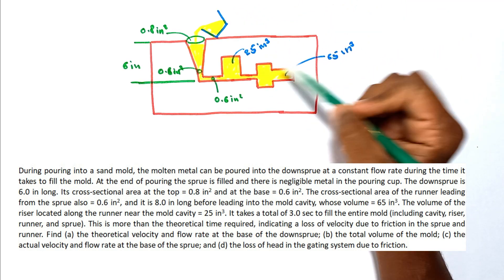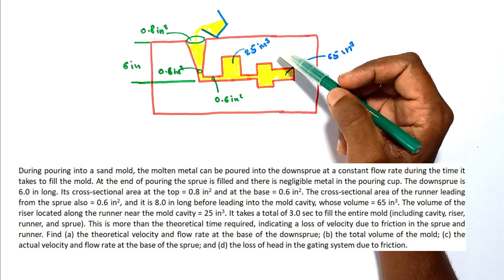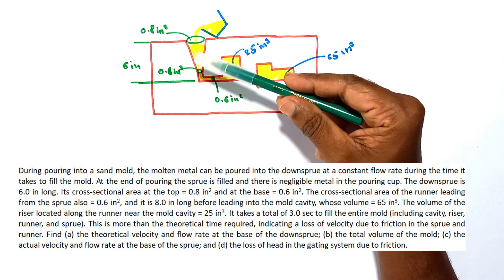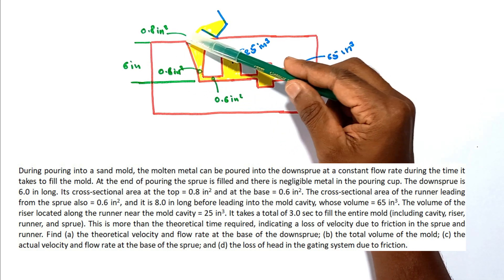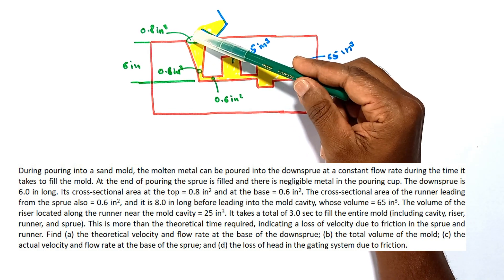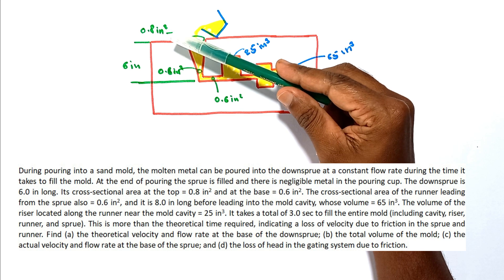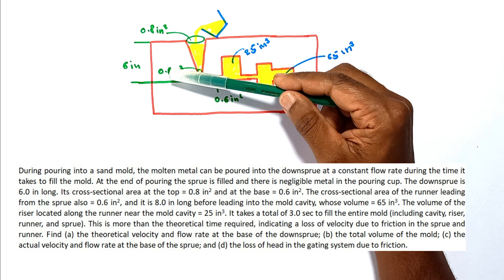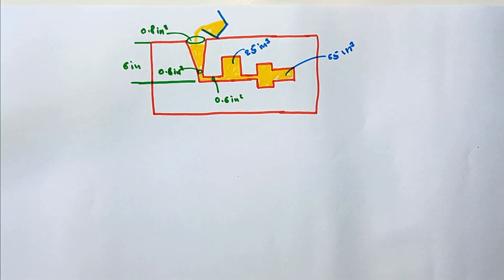Reading the figure for this problem: the casting volume is given as 65 cubic inches and the riser volume is given as 25 cubic inches. The runner cross-sectional area is given, the sprue height is given as 6 inches, the sprue pouring cup at the top end cross-sectional area is given as 0.8 square inches, and at the bottom of the sprue the cross-sectional area is given as 0.6 square inches.